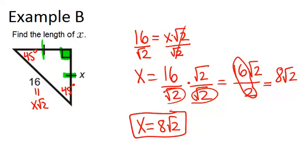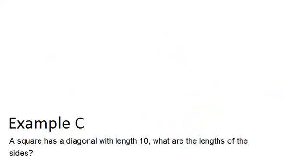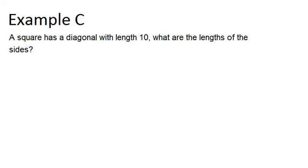Let's look last at example C. A square has a diagonal with length 10. What are the lengths of the sides?